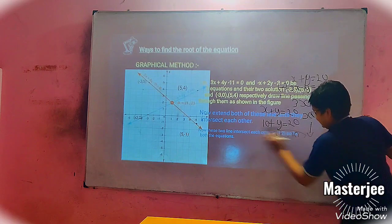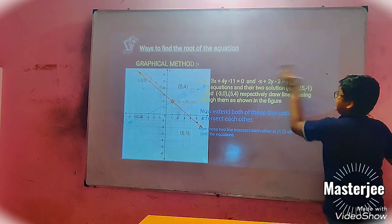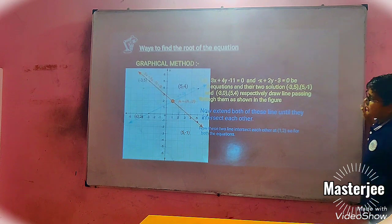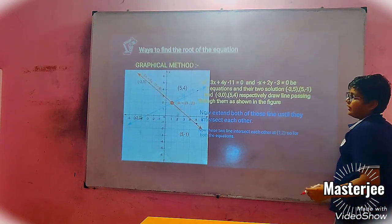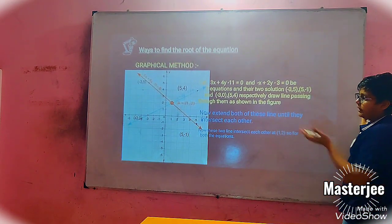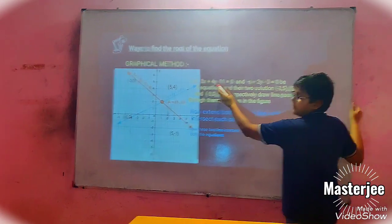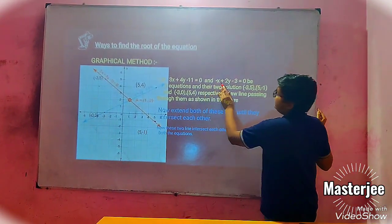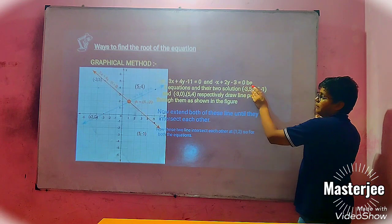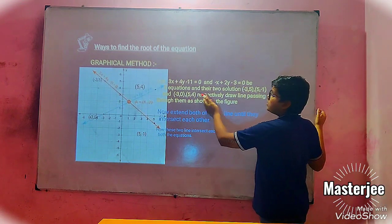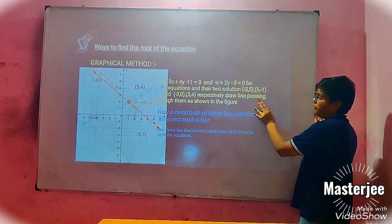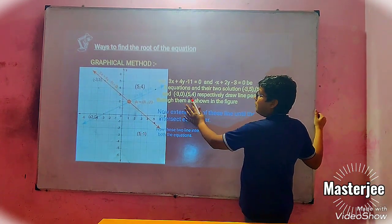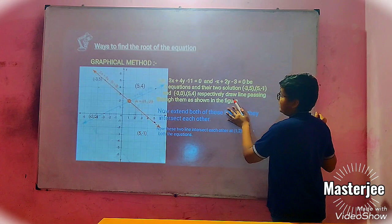Next, we have the graphical method. What is the graphical method? We can find the value by graph. Let 3X plus 4Y minus 11 equal 0 be equation 1, and minus X plus 2Y minus 3 equal 0 be equation 2. The two solutions for equation 1 are minus 3, 5 and 5, minus 1, and for equation 2 are minus 3, 0 and 5, 4 respectively.